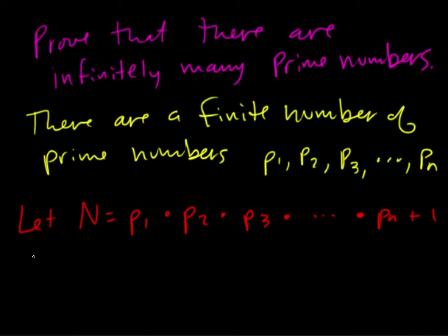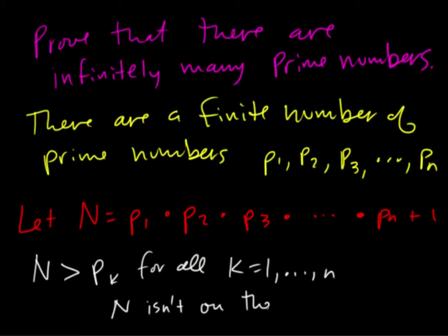...we need to look at N is going to be greater than p sub k for all k equal to one through n, and N is not a member of the list.